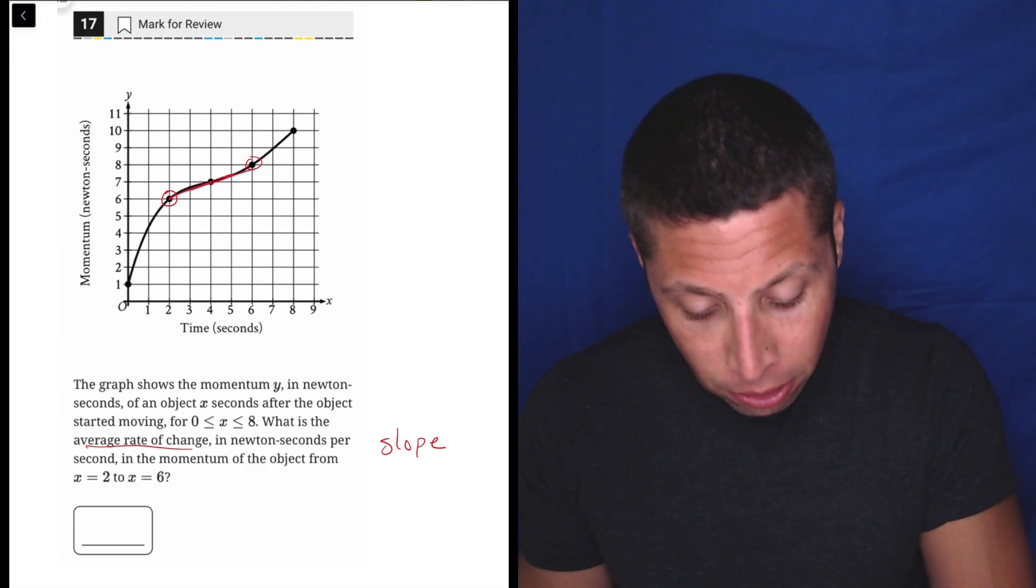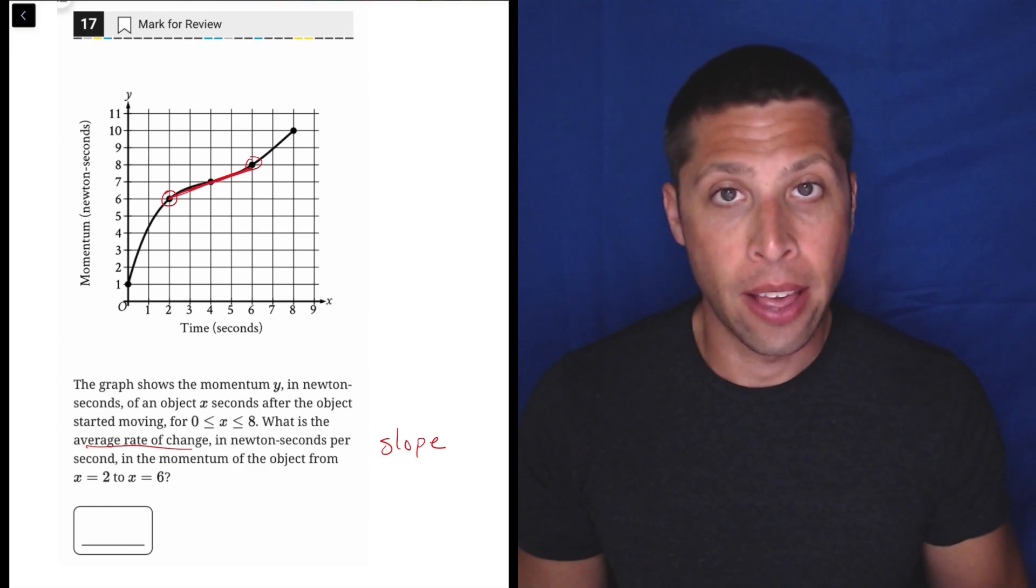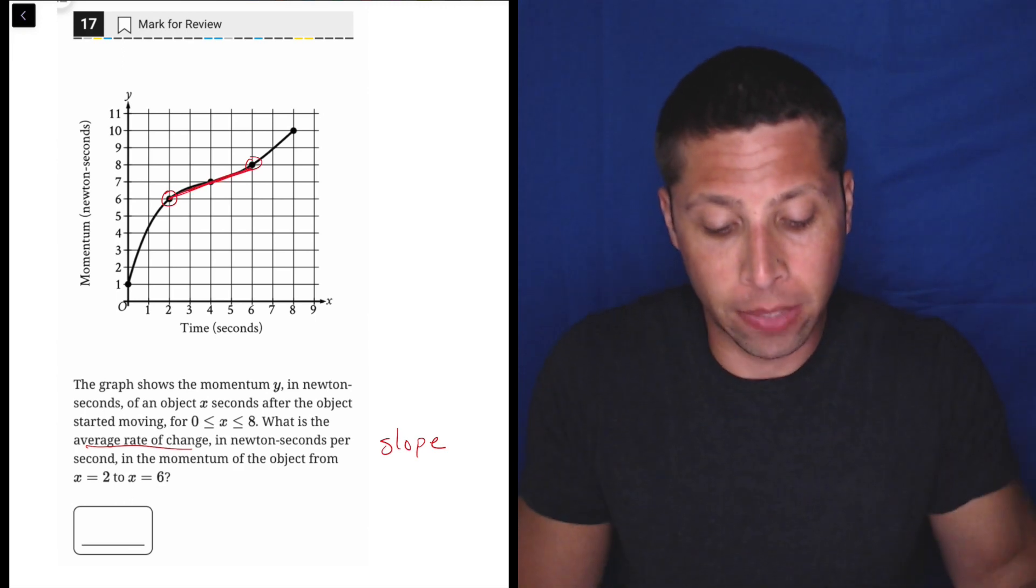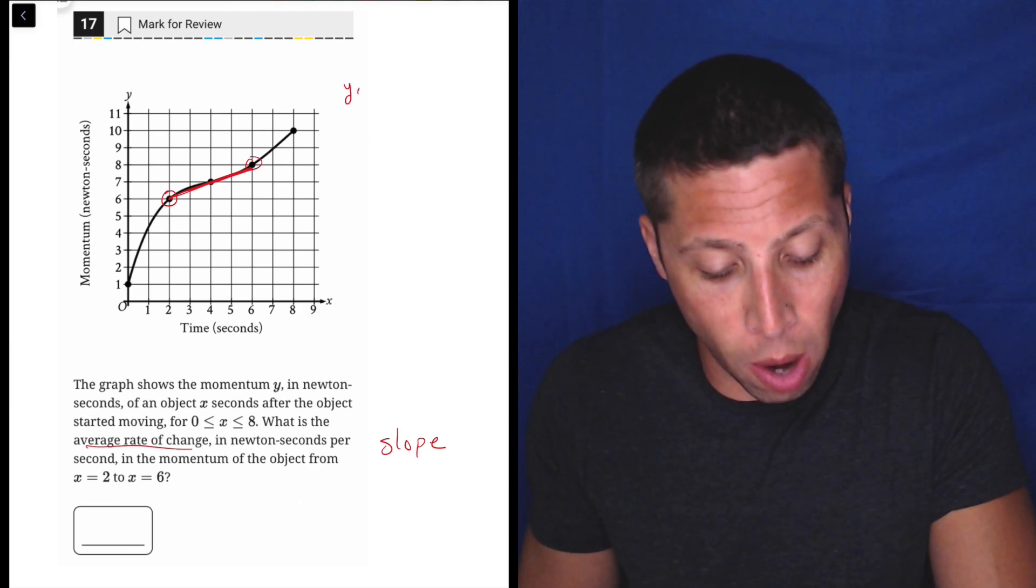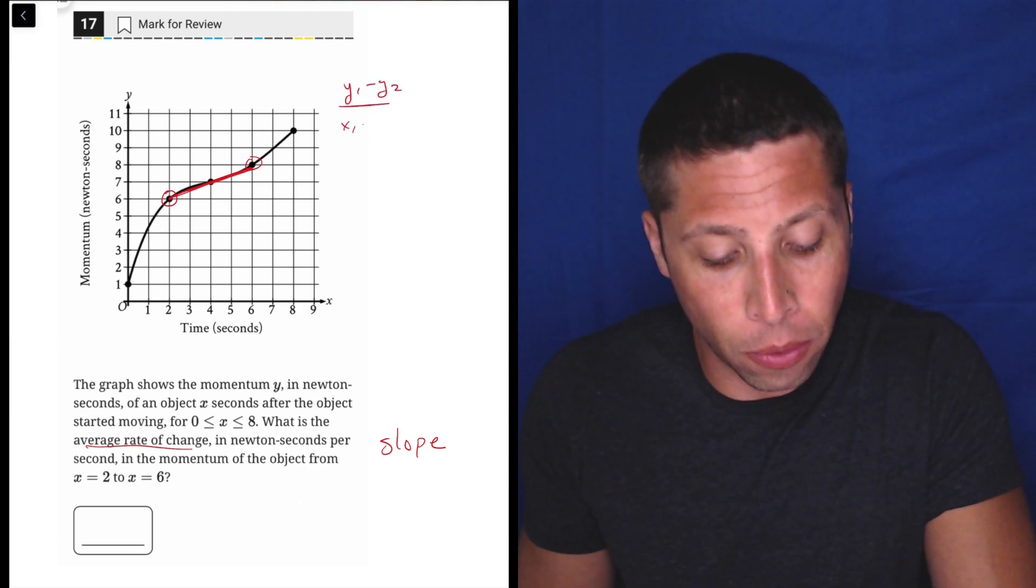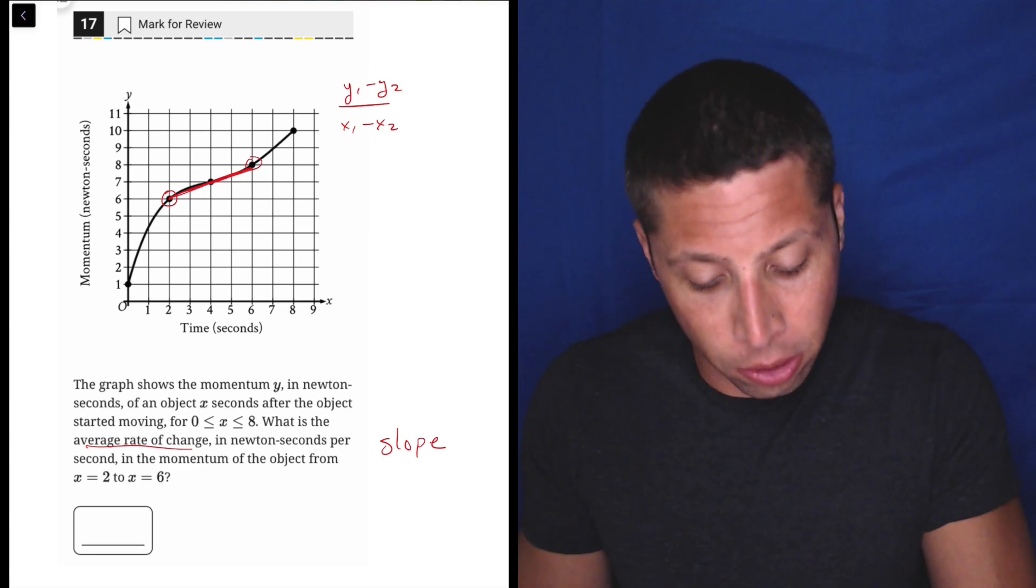Yeah it's a curve, but they want the slope between these two points, between the 2 and the 6. So we just pretend for the sake of calculating it that it's a straight line, and then we're just using our slope formula: y1 minus y2 over x1 minus x2.